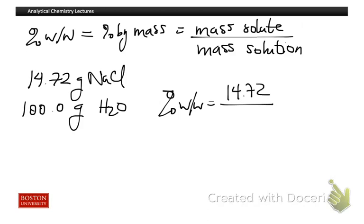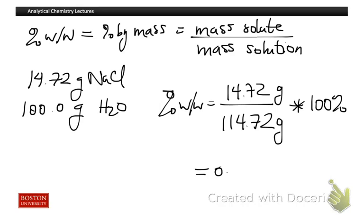Now notice, since they're both in grams, the units go away. A lot of times it's very convenient to take this times 100, so we can report it as a percentage. And if we do that, we get 0.1283 or 12.83 percent.